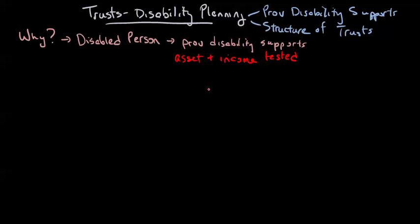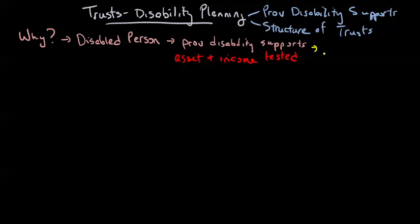The problem with the asset and income tests around these provincial disability supports is we really can't give a disabled person enough assets to live the rest of their life, and they can't earn enough income to have a comfortable living without losing access to those provincial disability support benefits. We'd like to have this person comfortable and able to support themselves, but in doing so we may end up putting them offside. If this person can go to work and legitimately earn a healthy income, they'll put themselves offside for provincial disability supports as well — programs like AISH (the Assured Income for the Severely Handicapped in Alberta) or ODSP (the Ontario Disability Supports Program) in Ontario.